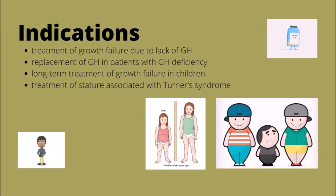Somatropin is indicated for the treatment of children with growth failure due to lack of growth hormone or chronic renal failure. It is also indicated for replacement of growth hormone in patients with growth hormone deficiency, long-term treatment in children born small for gestational age who do not achieve catch-up growth by 2 years of age, treatment of short stature associated with Turner's syndrome, and to increase protein production and growth in various AIDS-related diseases.